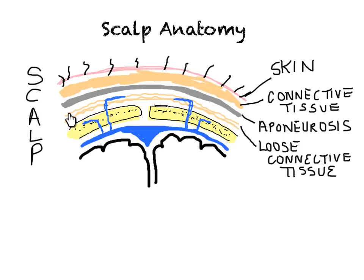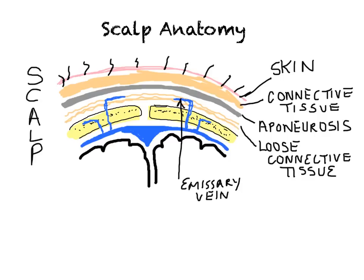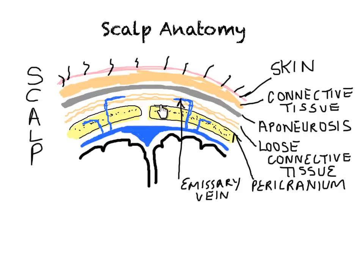The fourth layer is loose connective tissue. The emissary veins that drain into the superior sagittal sinus are present in this layer. The fifth layer is the pericranium. This is basically the periosteum of the skull bone, surrounding the whole skull bone, and is loosely attached to the surface of the skull bone while it is very firmly adherent at the suture lines.